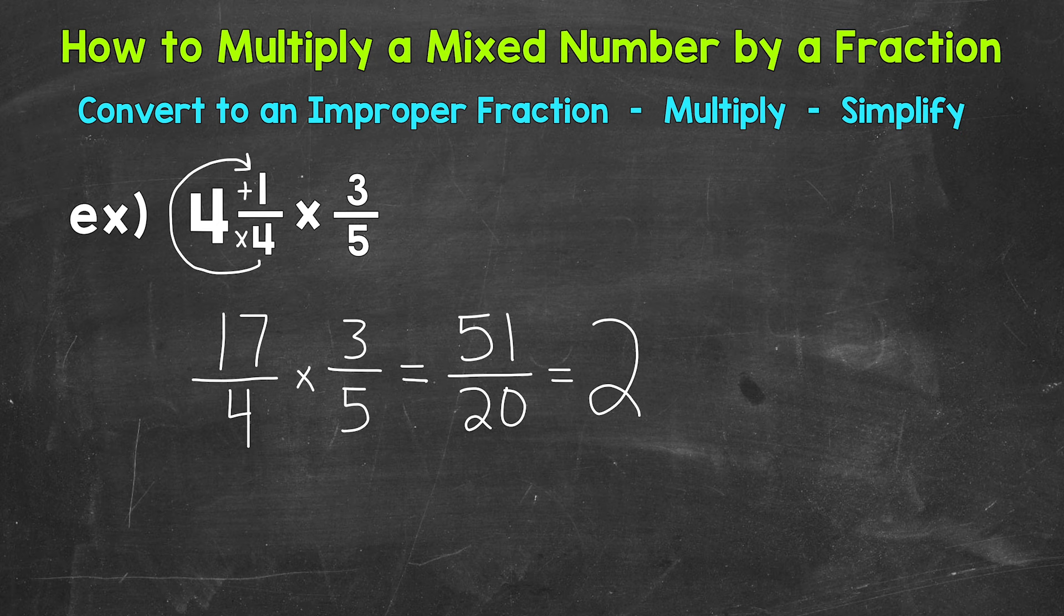So we have a remainder of 11. That's the numerator of our mixed number. And we keep our denominator of 20 the same.